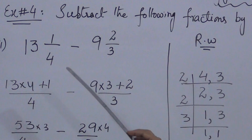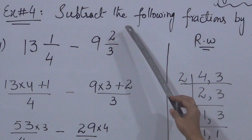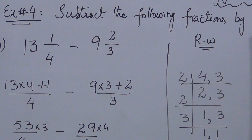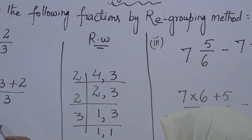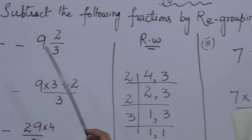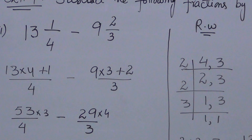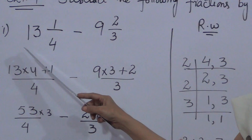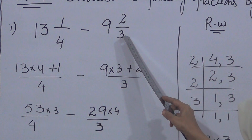Exercise 3 was addition only, but when we separate the whole numbers from all numbers for addition and subtraction of fractions, the regrouping method can be used for both. Now we are doing subtraction of fractions. Question number 1 is: 13 whole number 1 upon 4 minus 9 whole number 2 upon 3.